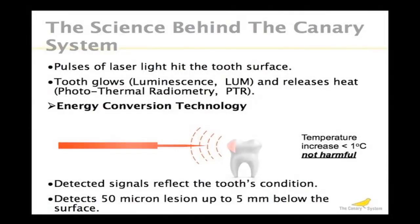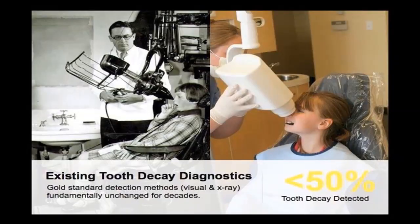The Canary uses two components to its technology: luminescence and photothermal radiometry. This is different than any other product out in the marketplace. It's a laser-based product that scans into the tooth. The laser is actually modulated so that the heat penetrates into the tooth. We have the ability to read 5 millimeters into the tooth structure. Between the luminescence and the photothermal radiometry, we then get a number to determine the health of the tooth. Most products on the market are measuring bacteria on the tooth surface. We are actually going into the tooth structure and measuring what the crystal structures are like.